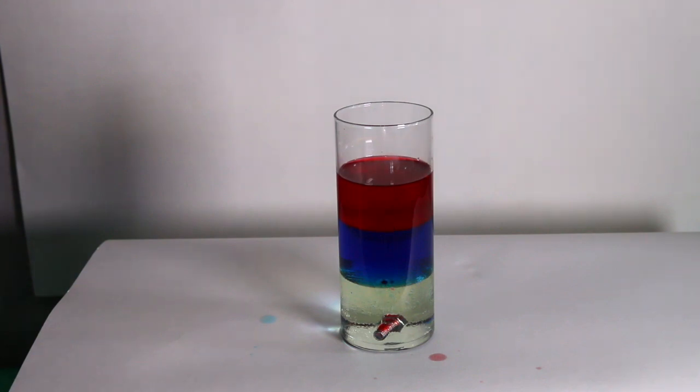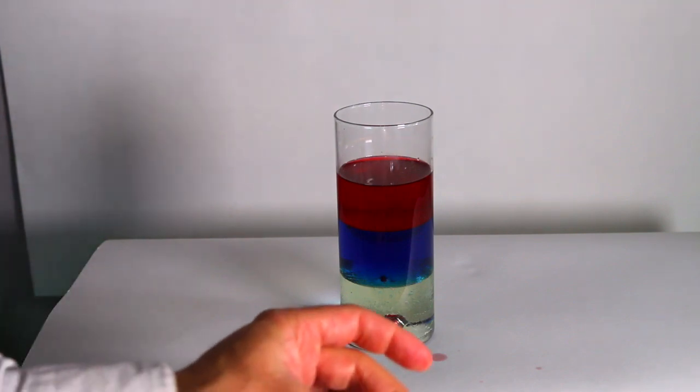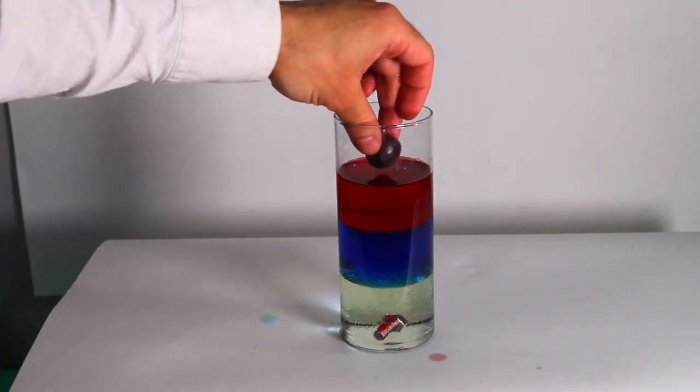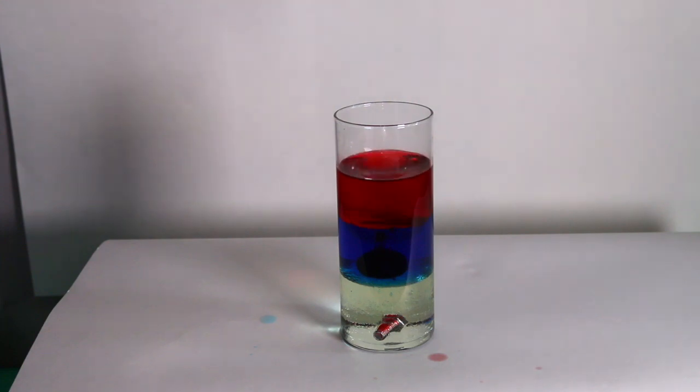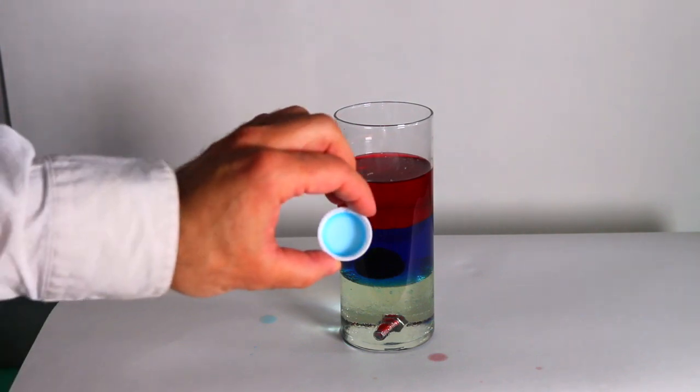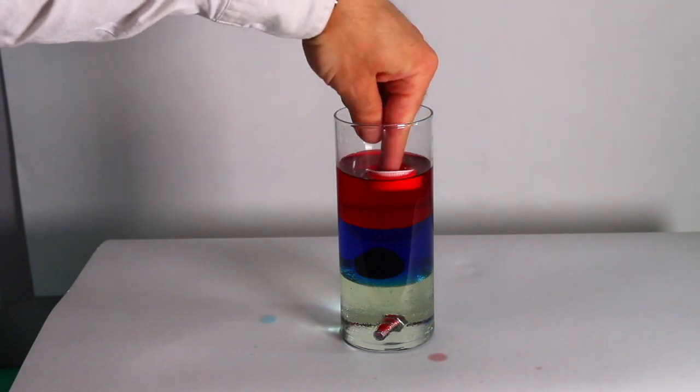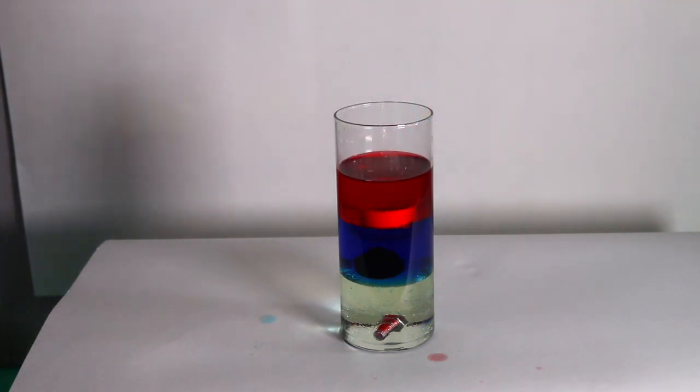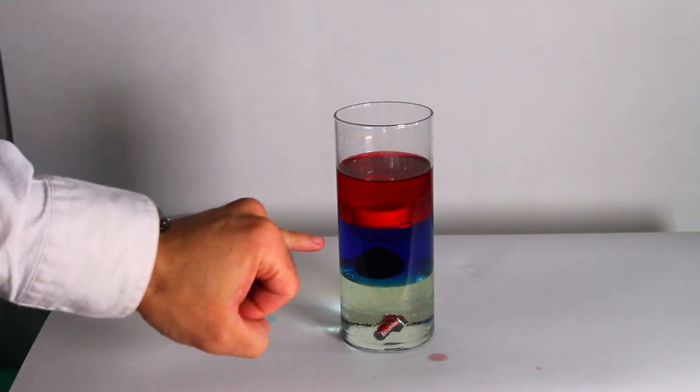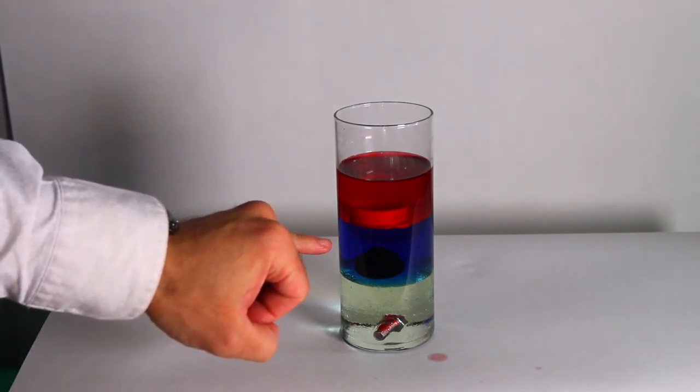Next, we have a grape. That should sit on top of the blue water. Next, we have a cap. And that should sit on top of the oil. It should sit on top of the water, actually.